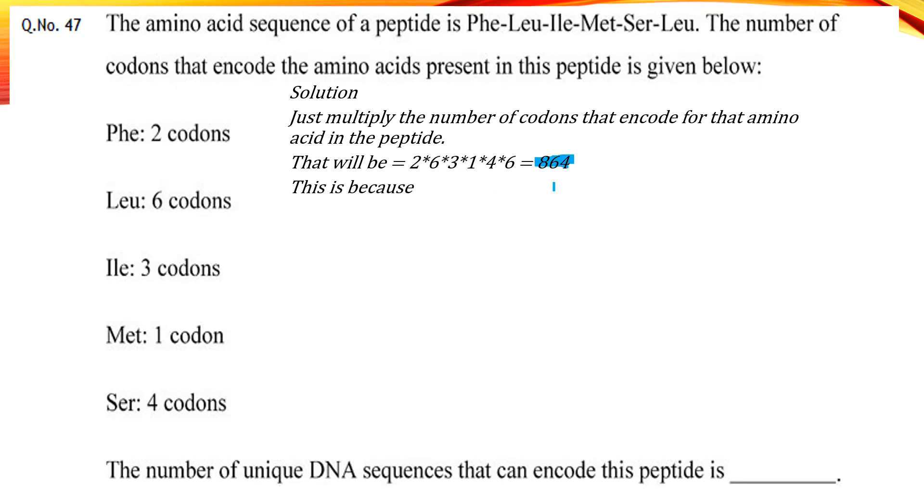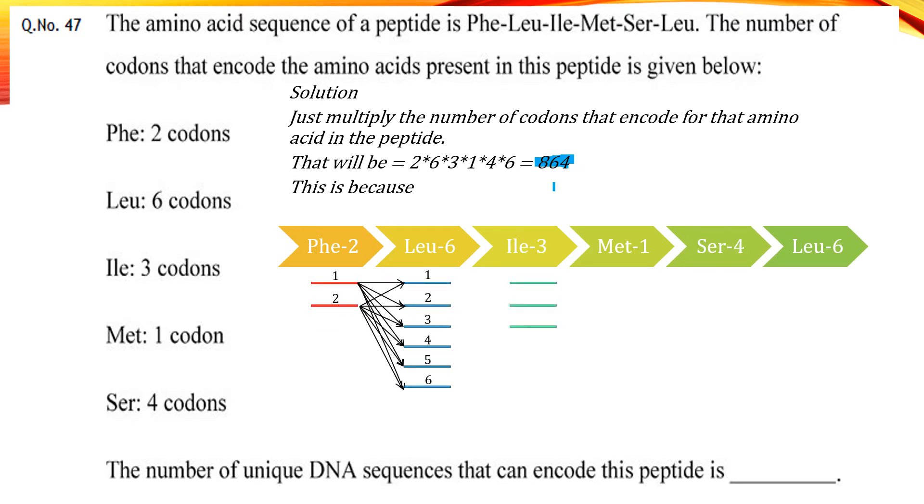And this you can understand with this diagram. See how each possible codon has a possibility to make a new sequence.